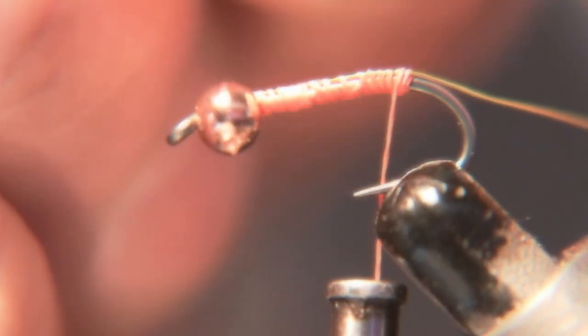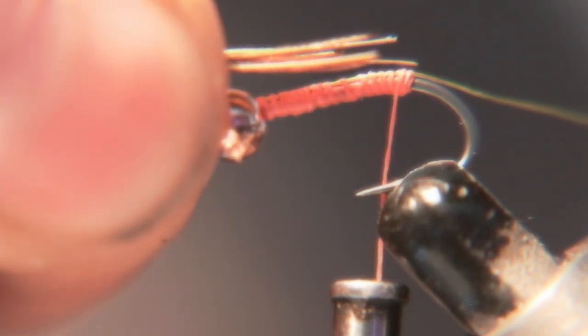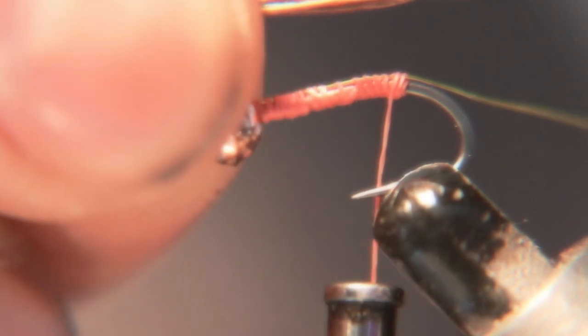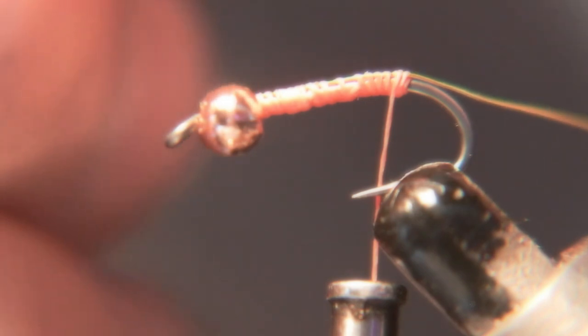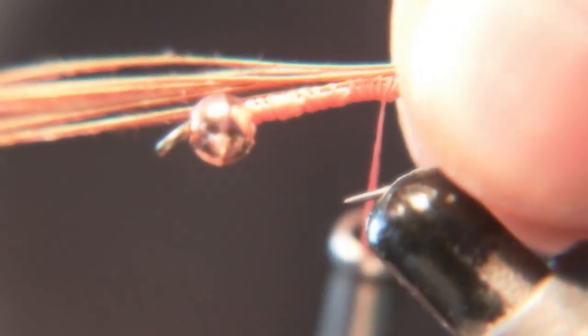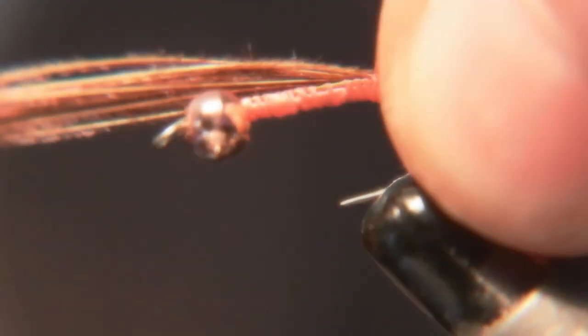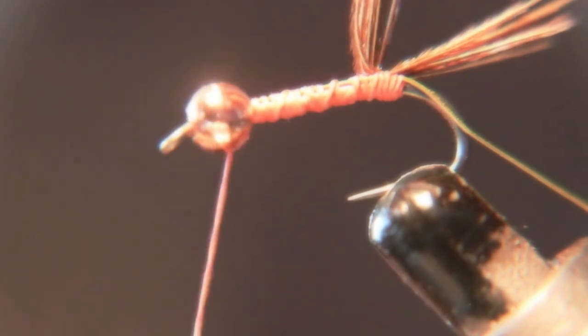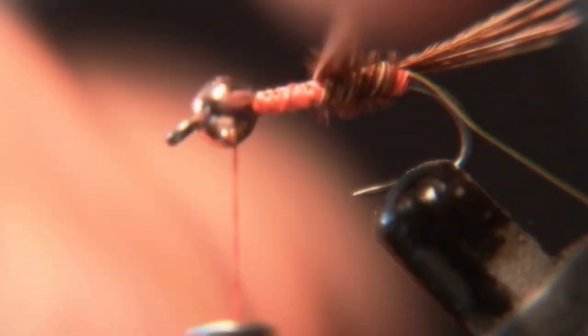Now we're tying the tail and we're gonna use the rest of it for the body, the rest of the pheasant tail. We're gonna tie in the pheasant tail about the length, not the length of the shank, but behind the bead to the bend, about how long I make it. And I'll wrap the pheasant tail around the shank all the way up to right behind the bead and then tie it off.